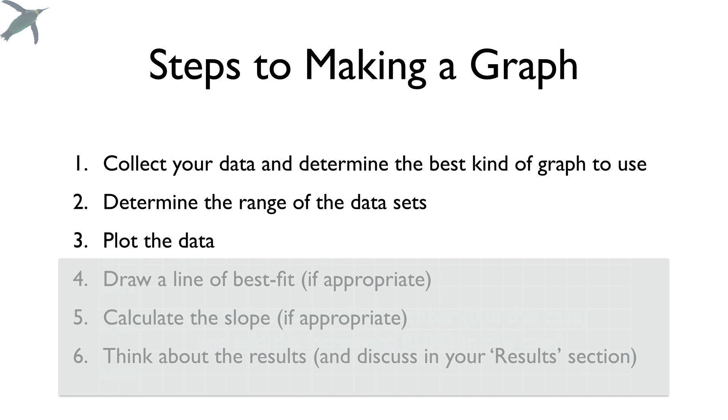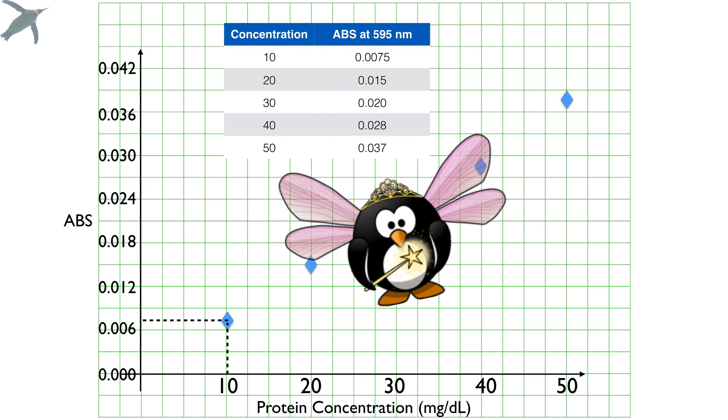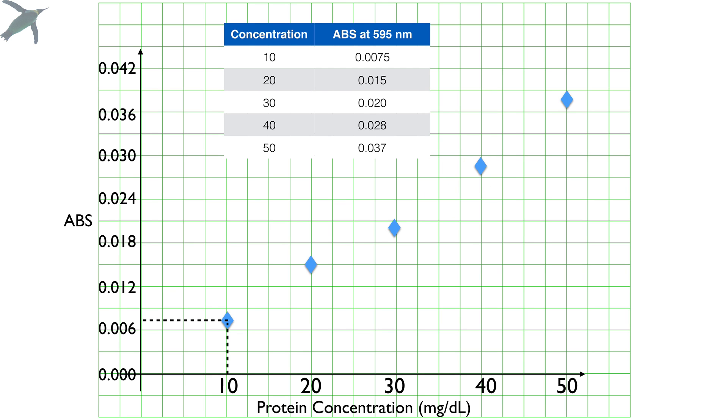Now I'm going to plot the data. So what I do is I look at my data and I take that first point, the 10 on the X, 0.0075 on the Y. So I'm going to go up on the X. And then I'm going to find 0.0075 on the Y. And that's where my point goes. And I'm going to do the same thing for the rest of my data points. And, ta-da, there you go. Those are my points plotted on the graph.